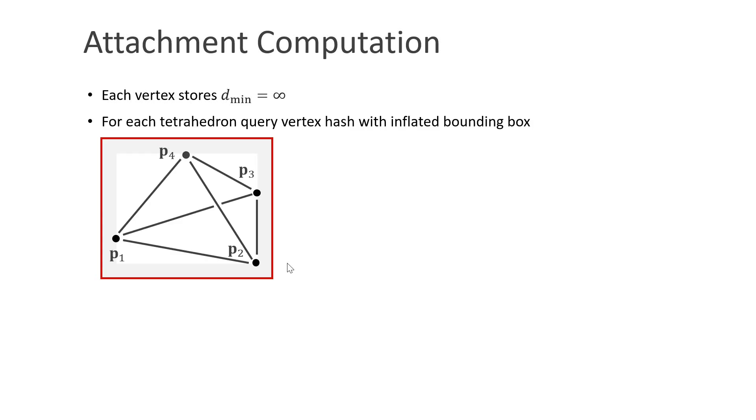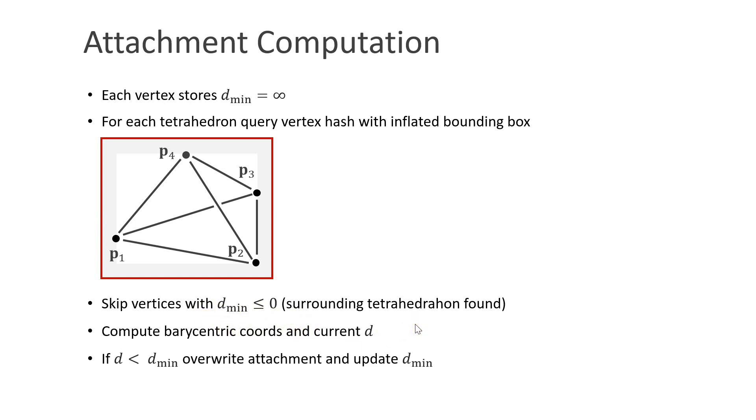Before the simulation starts, we have to compute all the barycentric coordinates of all the vertices of the visual mesh. To do this, we store a value dmin with each vertex and initialize it with infinity. Then we store all the vertices in a hash grid. For each tetrahedron, we compute an inflated bounding box. We use this to query the vertex hash. For each vertex returned by the query, we check whether the corresponding value dmin is smaller than zero. If so, we already found the containing tetrahedron. If not, we compute the barycentric coordinates of the returned vertex with respect to the current tetrahedron, d. If d is smaller than the dmin value of the vertex, we overwrite dmin and replace the attachment. This process is fast enough so we can do it on the fly, before each simulation.